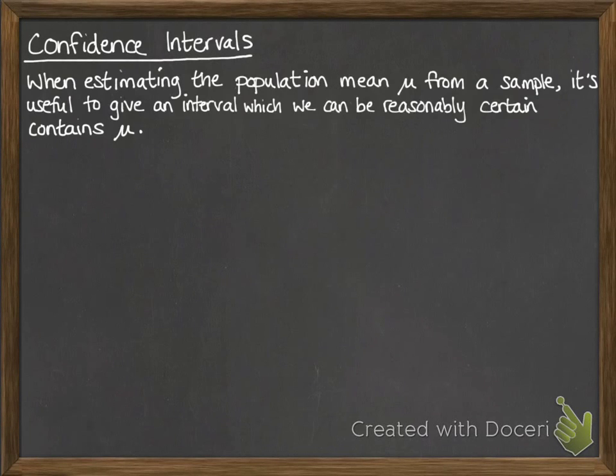Confidence intervals. When you're estimating the mean μ of a population from a sample, it's useful to give an estimate as the sample mean, but it's even more useful if we can give an interval which we can be reasonably certain accurately contains that population mean.